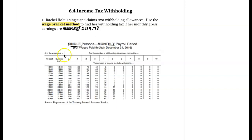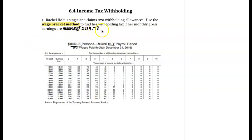First question: Rachel is single and claims two withholding allowances, uses the wage bracket method. We're going to use the table to find her withholding tax if her monthly gross earnings are $2,139.78. Notice that this table is for someone that is single.